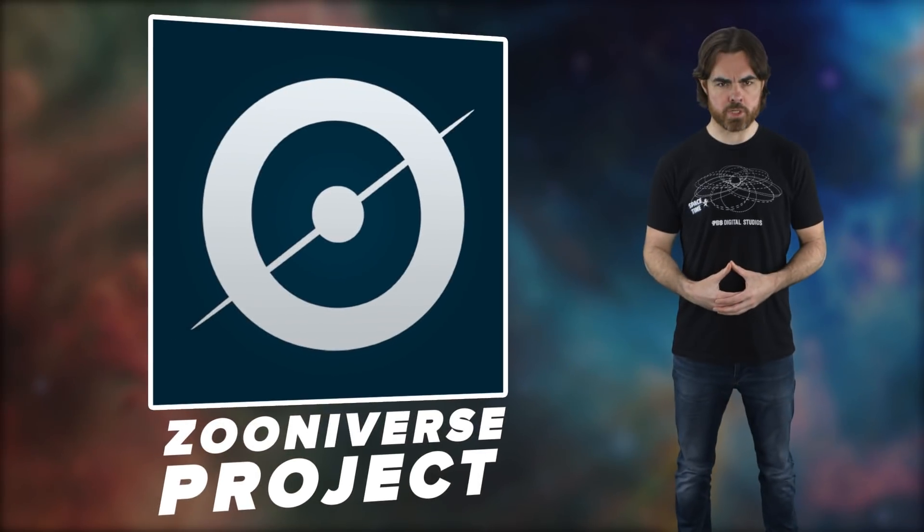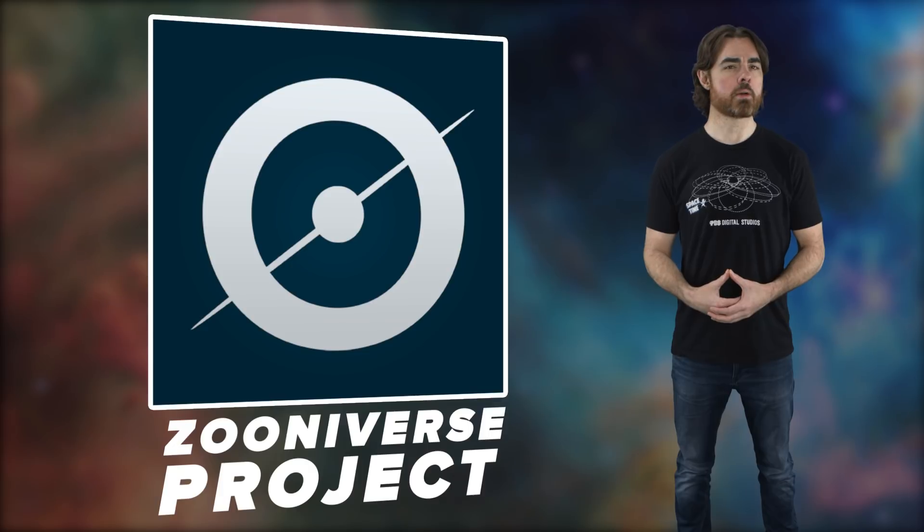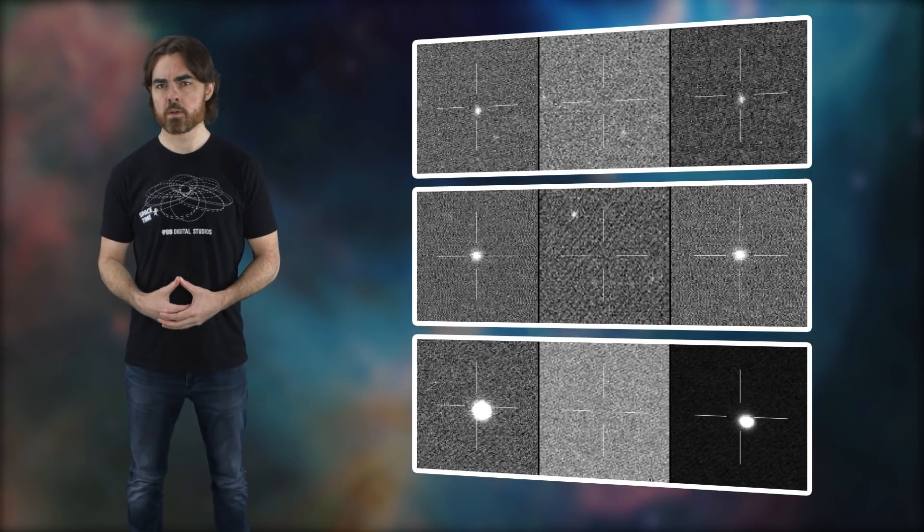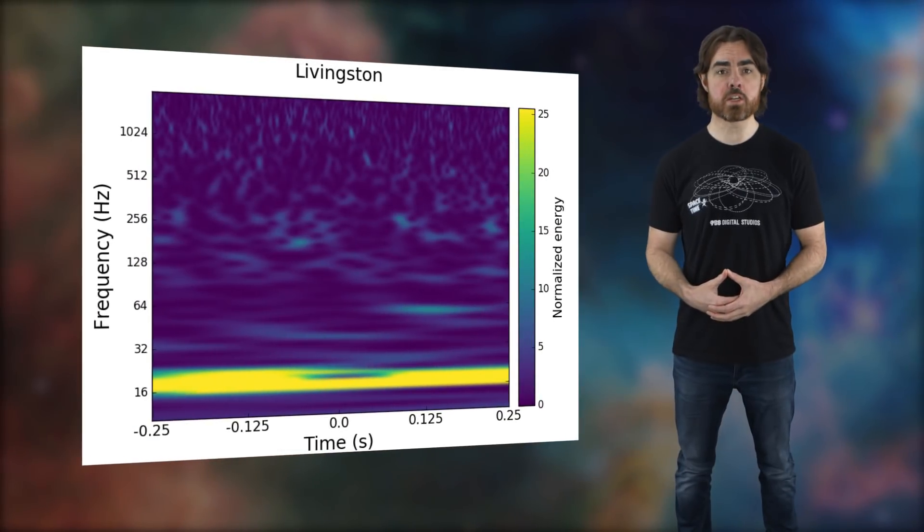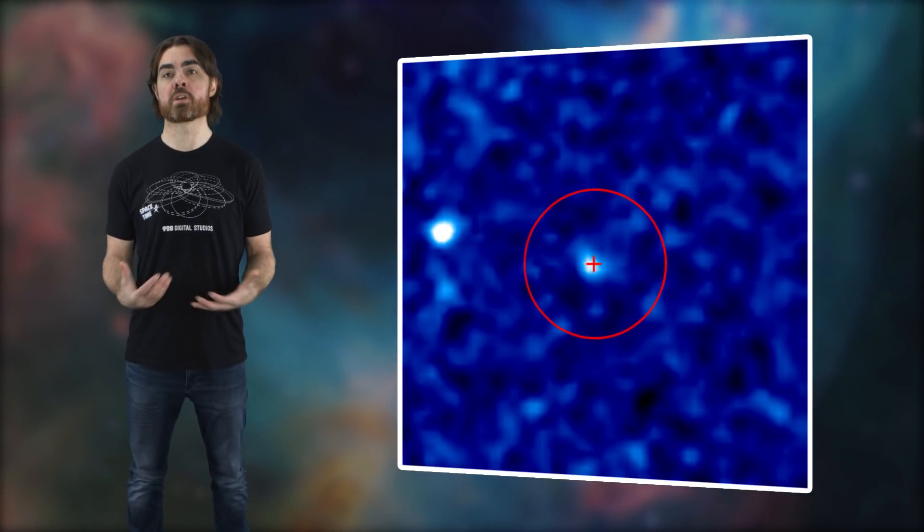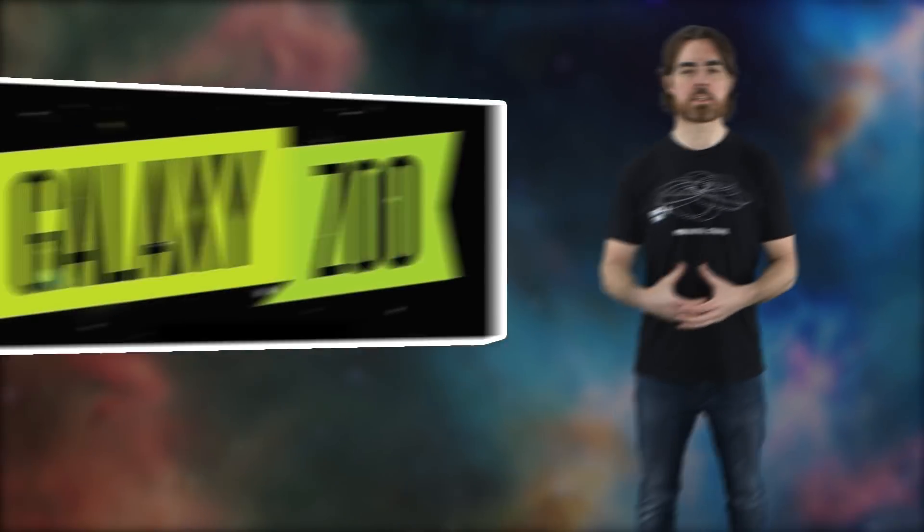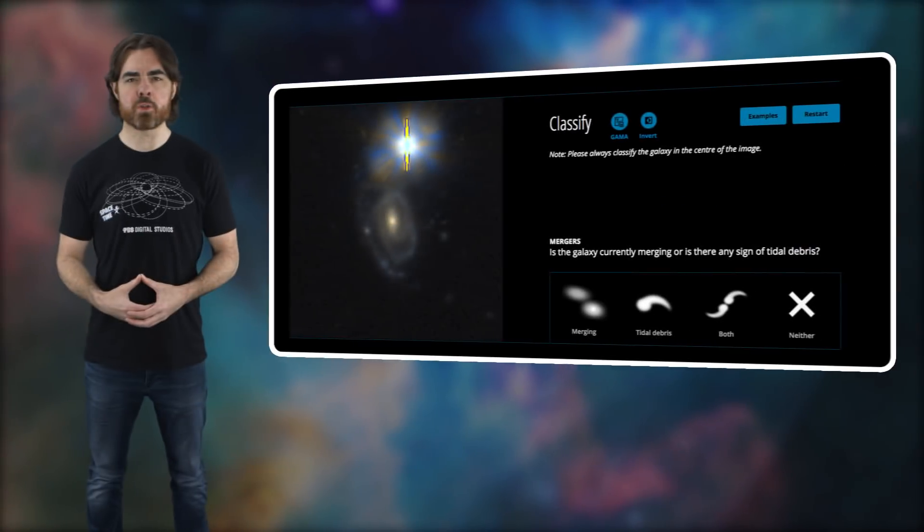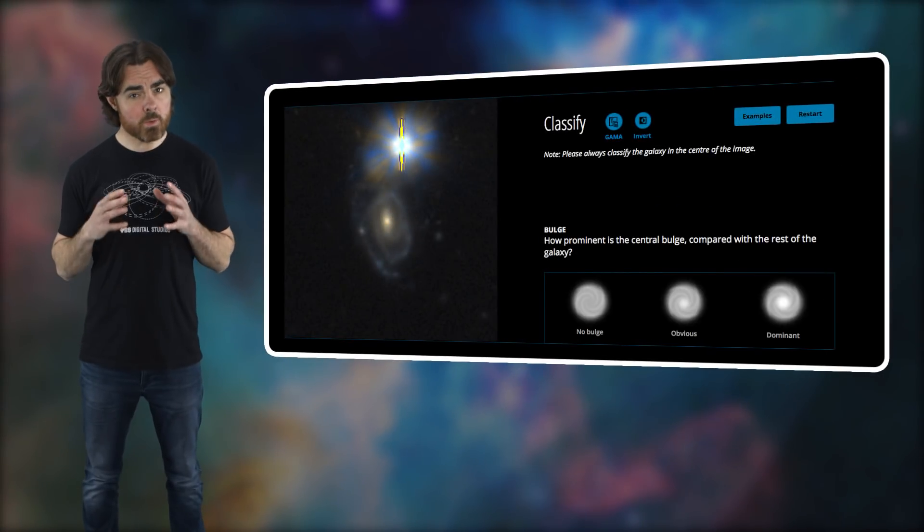The Zooniverse project leverages this very human superpower in lots of its projects. For example, spotting supernovae, or looking for gravitational wave signals in LIGO, and finding planets forming in the debris disks of new solar systems. And of course, their Zooniverse's first and founding project, Galaxy Zoo. This project used citizen scientists to classify the morphological types of nearly one million galaxies.